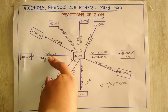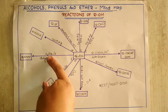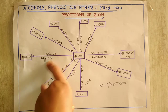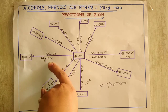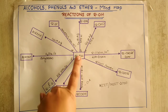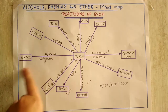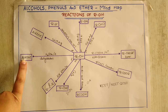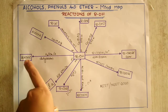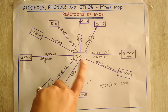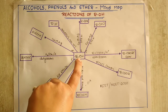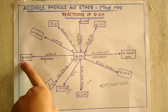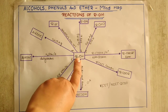The next reaction: when alcohol is treated with sulfuric acid and heated, the sulfuric acid acts as a dehydrating agent — it removes the water molecule from the alcohol, resulting in the formation of an alkene. This is the reverse of what we studied during the preparation of alcohol: alkene upon hydrolysis gives alcohol, and alcohol upon dehydration in the presence of sulfuric acid gives alkene.